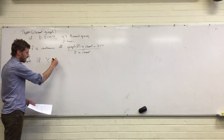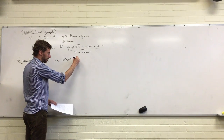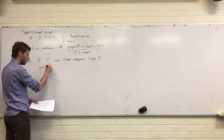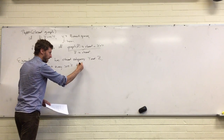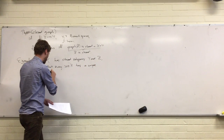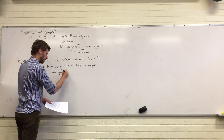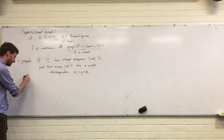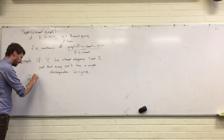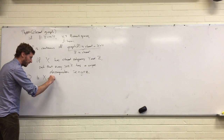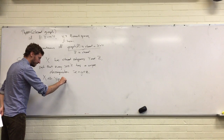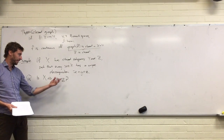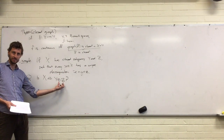If X has closed subspaces Y and Z, such that every x in X has a unique decomposition, the thing we might ask here is: in that case, is X equivalent to Y direct sum Z? And at the level of vector spaces, yes — that's what it means to say every x in here we can write uniquely as something in Y plus something in Z.